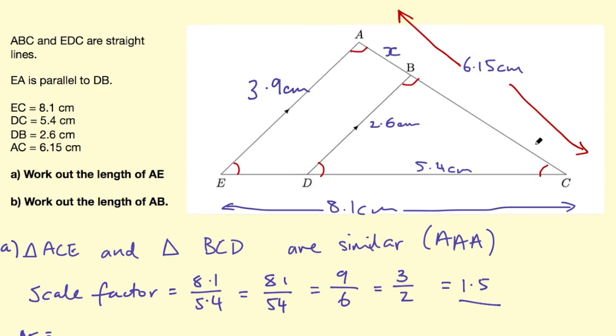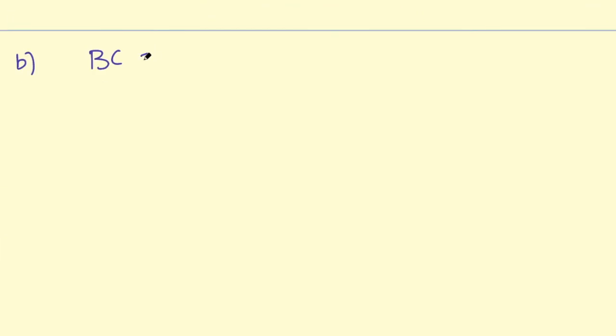So the way that I can solve this is I can find BC and take that away from AC. The way I can find BC is actually dividing this number by the scale factor, so BC is going to be 6.15 divided by 1.5 and I'm going to use my calculator for that and that will give me 4.1.